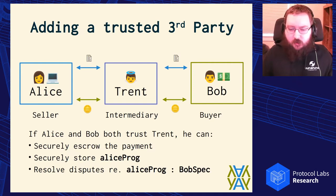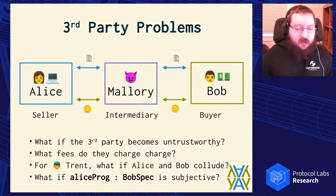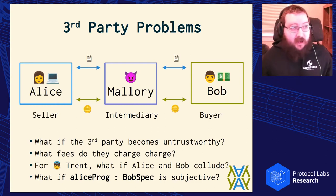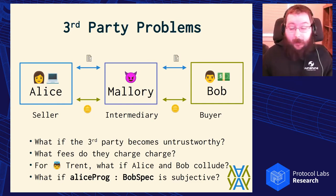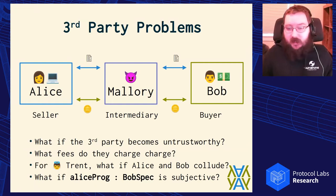But there are also some problems with this model. If the third party is untrustworthy, what guarantees do Alice and Bob have that the service they're both interacting with won't take the money and run, or hike their fees? For the third party, what guarantee do they have that Alice and Bob aren't going to collude? There have been cases with software marketplaces where buyers and sellers meet on the platform, get to know each other, trust each other, then cut out the intermediary — and third parties don't like that.